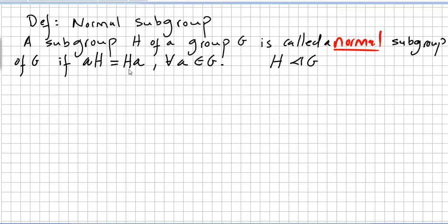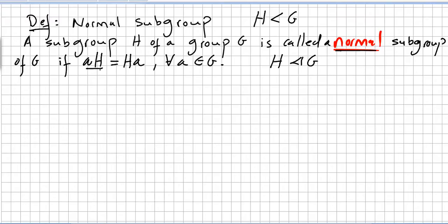In this video we revisit the definition of normal subgroup. A subgroup H of a group G is called a normal subgroup of G if the left cosets are equal to the right cosets — if AH equals HA for all A in G. We usually denote this by the triangle symbol: H is a normal subgroup of G.